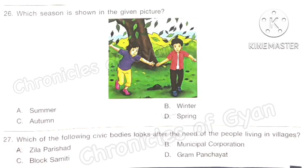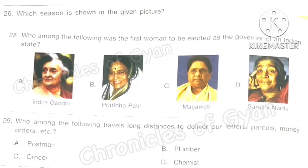Question 25: A large area of highland that is flat on top is called what? The correct answer is option D: Plateau. Question 26: Which season is shown in the given picture? We can see leaves falling, which happens in the season of autumn. The correct answer is option C: Autumn. Question 27: Which civic body looks after the needs of people living in villages? The correct answer is option D: Gram Panchayat. Question 28: Who was the first woman elected as governor of an Indian state? The correct answer is option D: Sarojini Naidu, the first governor of Uttar Pradesh, who served from 1947 to 1949.